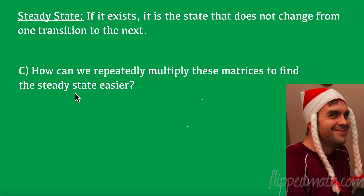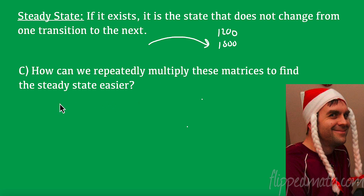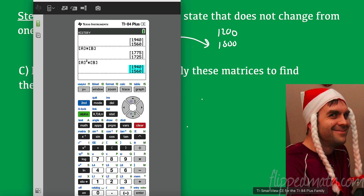Now let's talk about what a steady state is. A steady state, if it exists, is the state that does not change from one transition to the next — over time the followers are always the same. To find it, I take transition matrix A and multiply by vector B. To accelerate, let's do it for 20 years. I go up, highlight the expression, and change the exponent to 20.